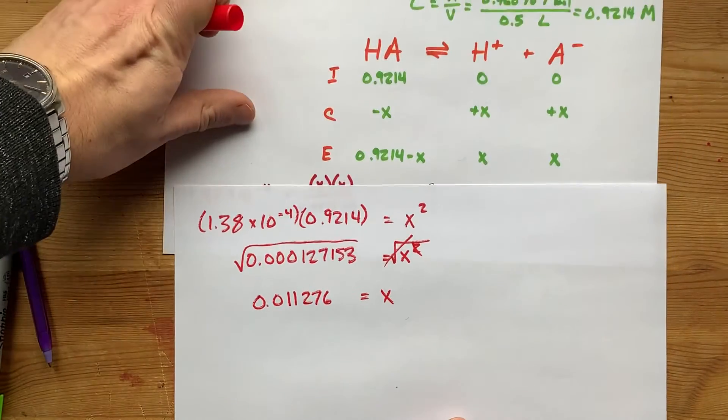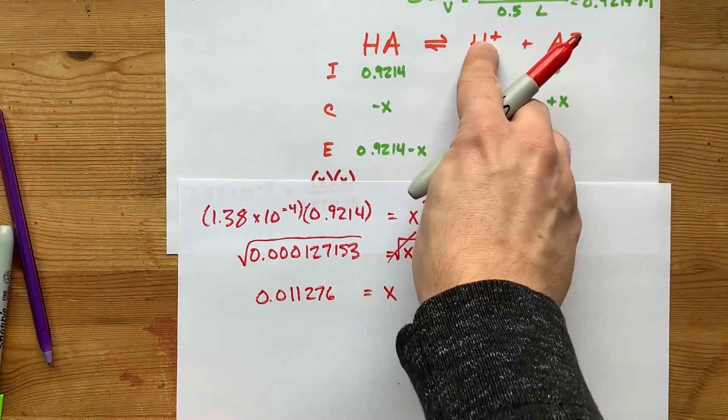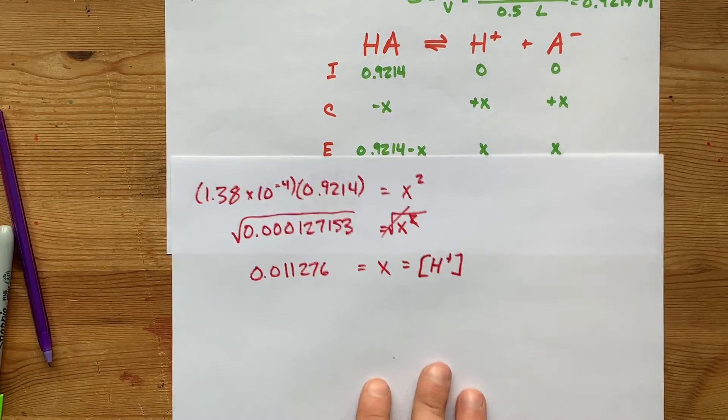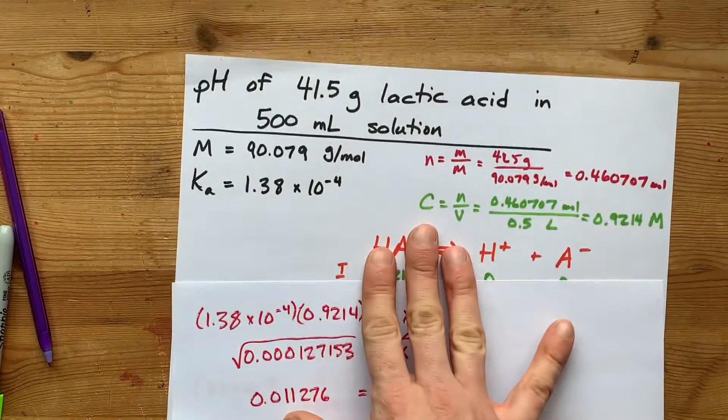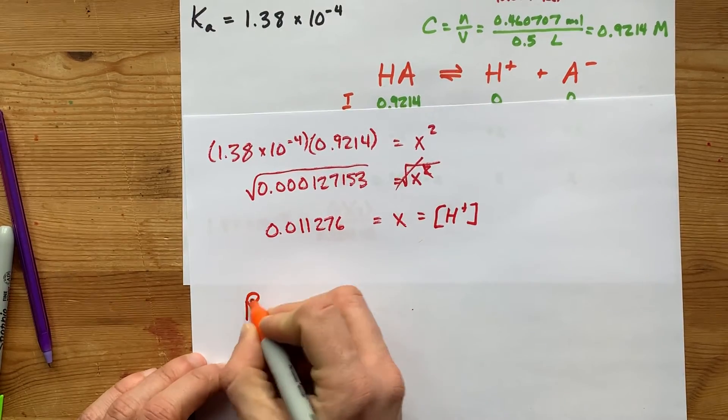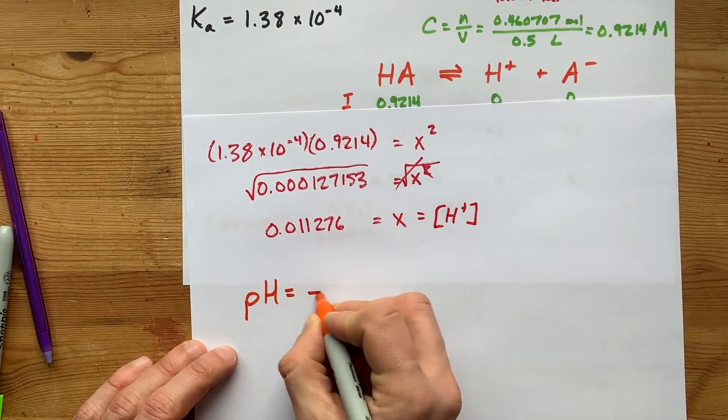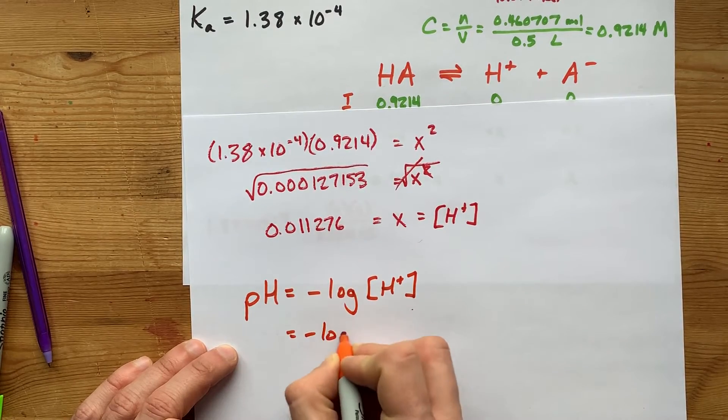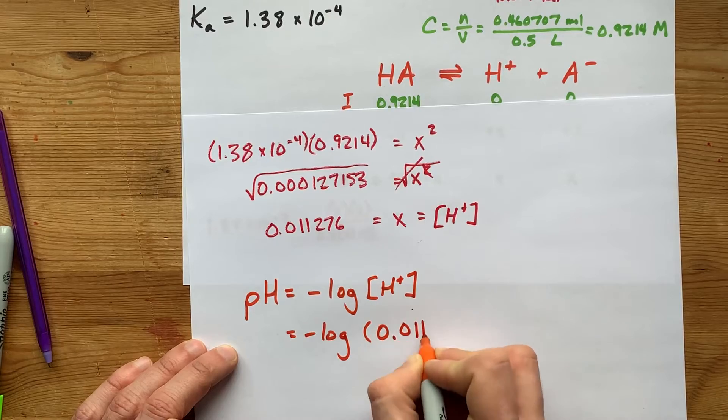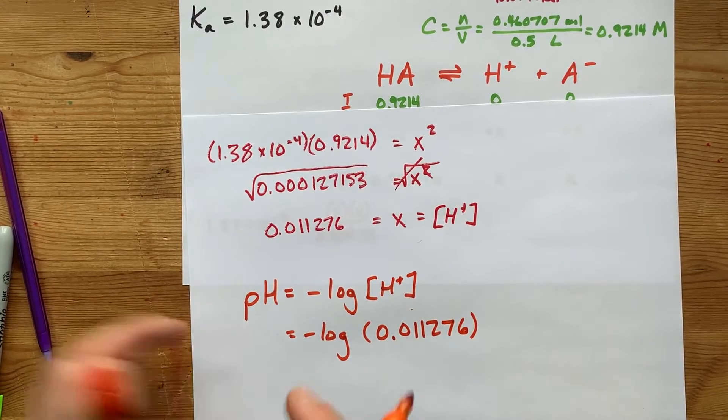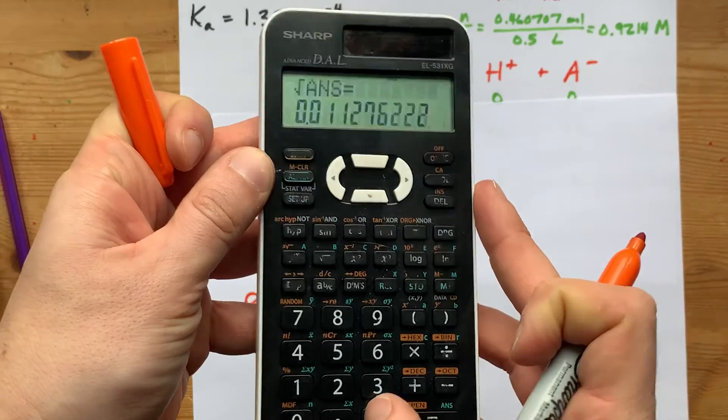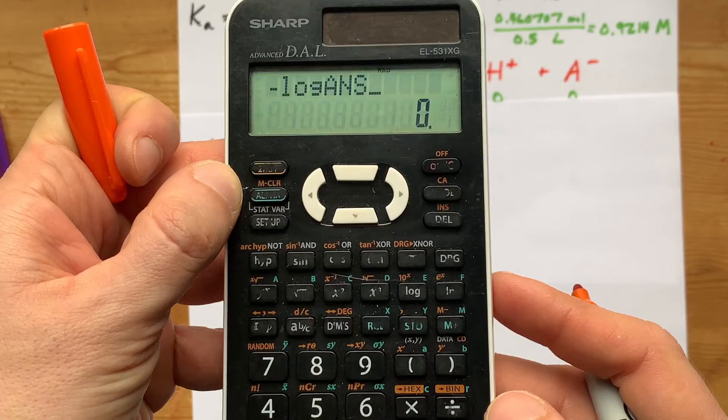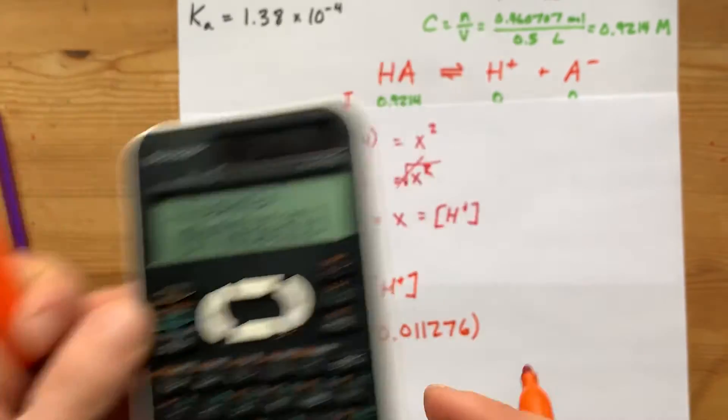Most importantly, X is the concentration of H plus at equilibrium. So, to answer the question about what's the pH of this solution, you take the negative log of that H plus concentration. For us, that's the negative log of 0.011276. Here on the calculator, I can just do negative, and there's a log button of the answer. I get 1.95.